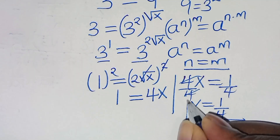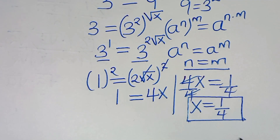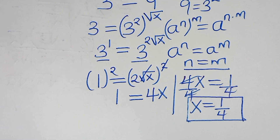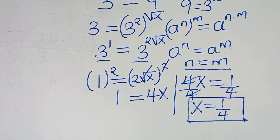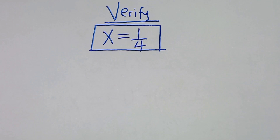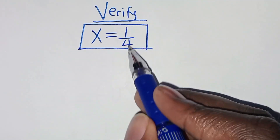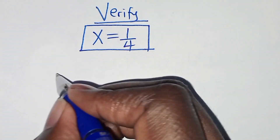This is the value of x. The next step is to verify that this value of x satisfies the equation. Let's verify that x equals 1 over 4 actually satisfies the original equation.